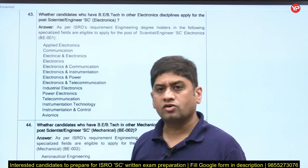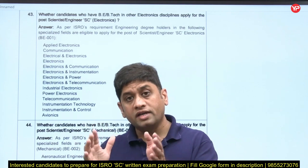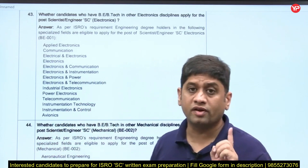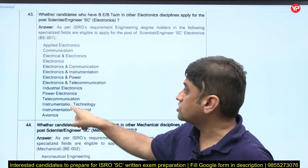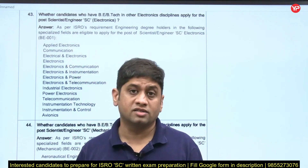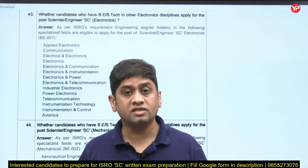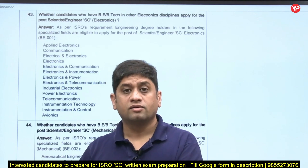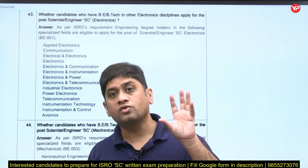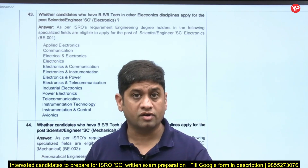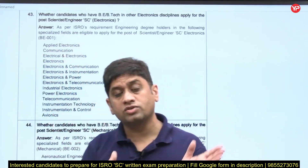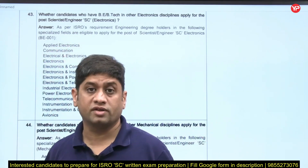60 questions will be from electronics and 20 questions will come from allied domains such as avionics, instrumentation and control, and power electronics. You need to be very careful to prepare these topics as well so you can score those 20 marks. These are the allied branches for electronics students. If you are writing the ISRO exam under the electronics category, 20 questions will come from these allied areas.